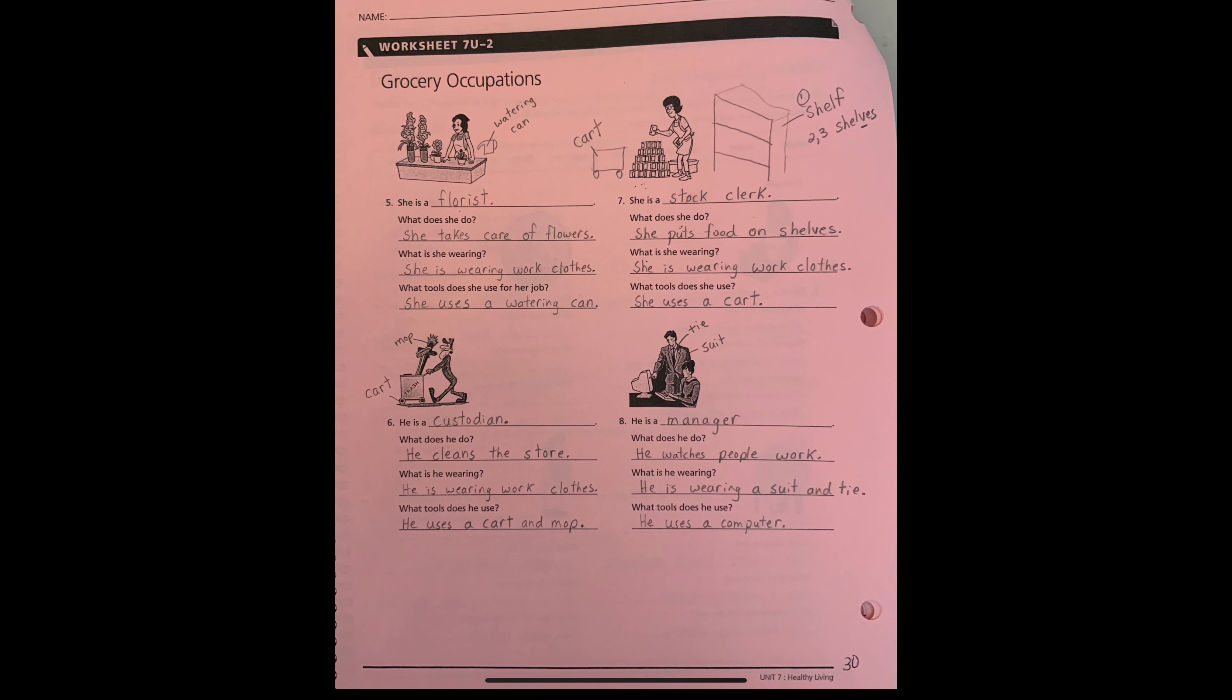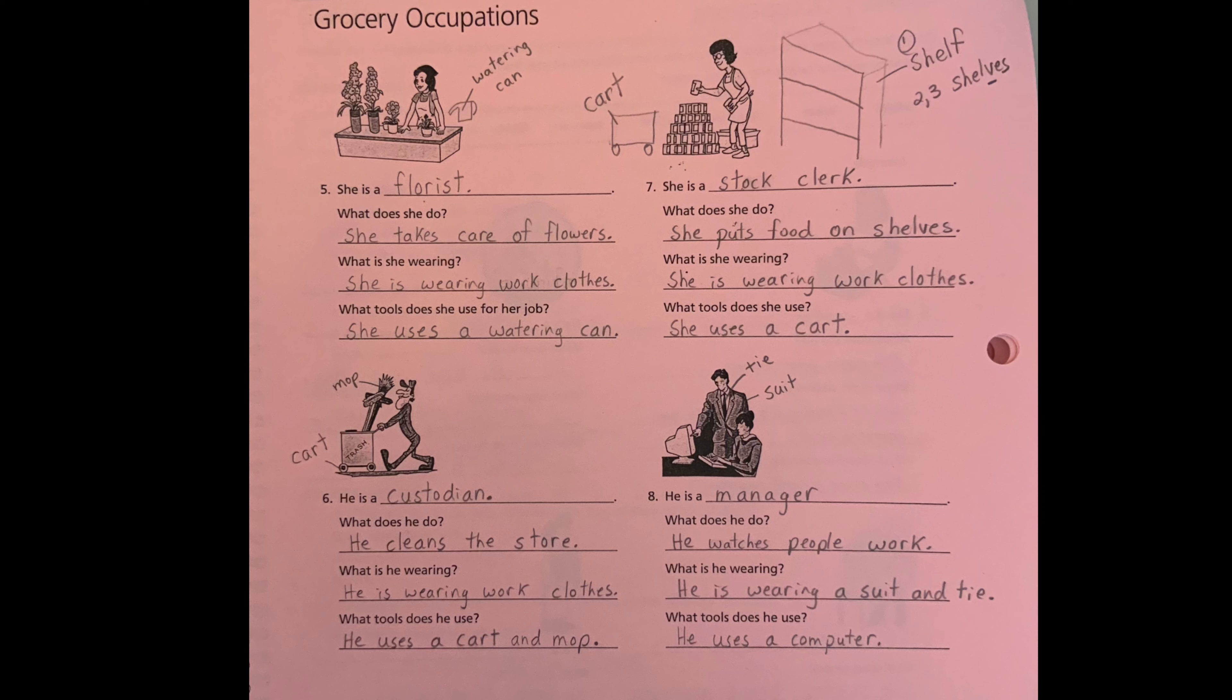Turn the page to page 30. Number five. She is a florist. What does she do? She takes care of flowers. What is she wearing? She is wearing work clothes. What tools does she use for her job? She uses a watering can.